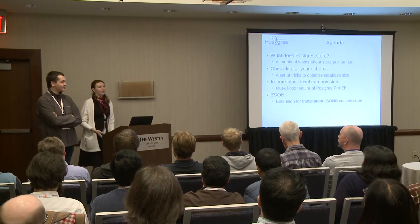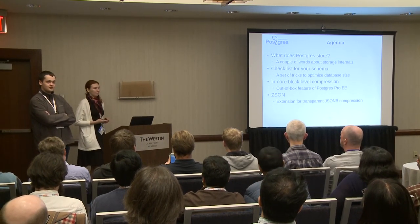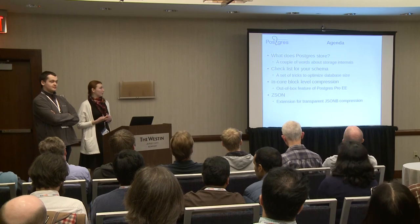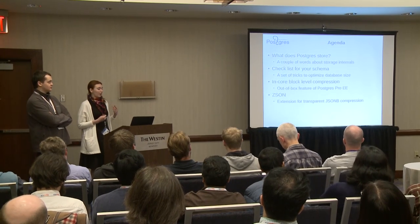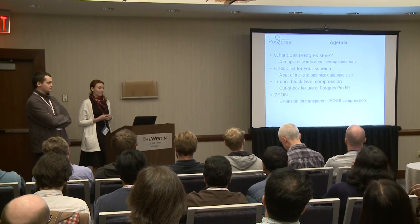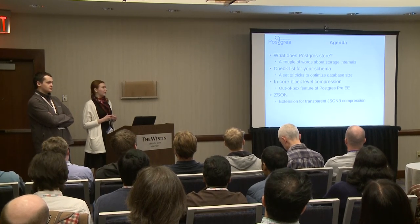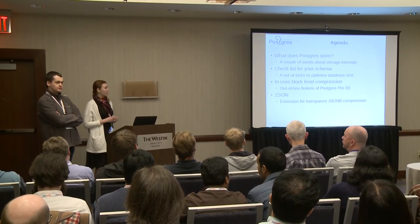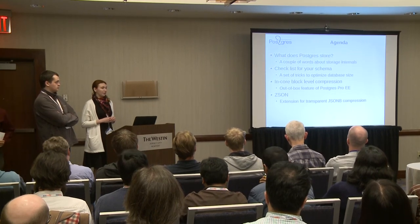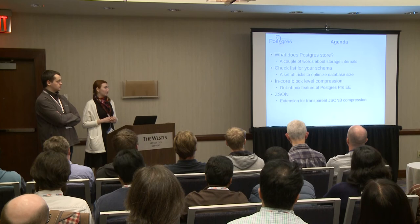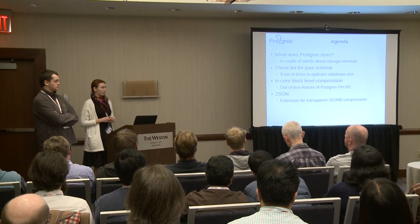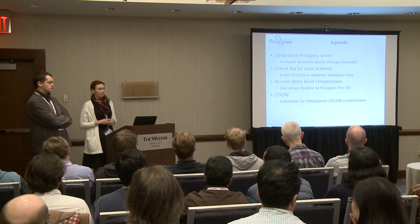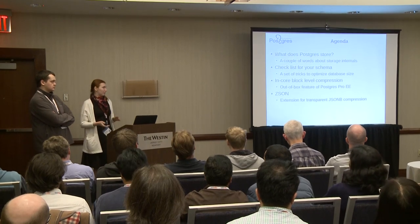I am pretty sure that everyone here understands the importance of data compression — we want to store more and more data every day. In this talk, I will cover compression in the natural process of PostgreSQL's data storage, then we will list a number of things you can check in the database schema to ensure it works optimally. Then we will introduce a new mechanism of page-level compression, which is a feature of PostgreSQL Enterprise Edition — a fork supported by our company. Finally, Alessandr will present the extension for JSONB compression, which is open source.